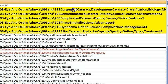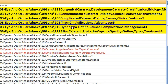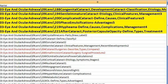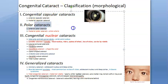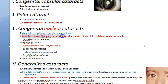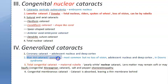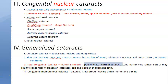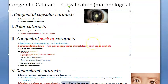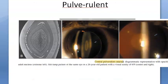Important lens topics: congenital cataracts, senile immature cataract, complicated cataracts, phacoemulsification, hyphema, after-cataract, and posterior capsule opacity. Congenital cataract classification: capsular, polar, nuclear, and generalized. Nuclear congenital cataracts include cataracta centralis pulverulenta (embryonic nucleus) and lamellar/zonular cataract (fetal nucleus, with riders/spokes of wheel appearance). Generalized types: coronary cataract, blue dot cataract (most common, seen in Down syndrome), and total congenital cataract.